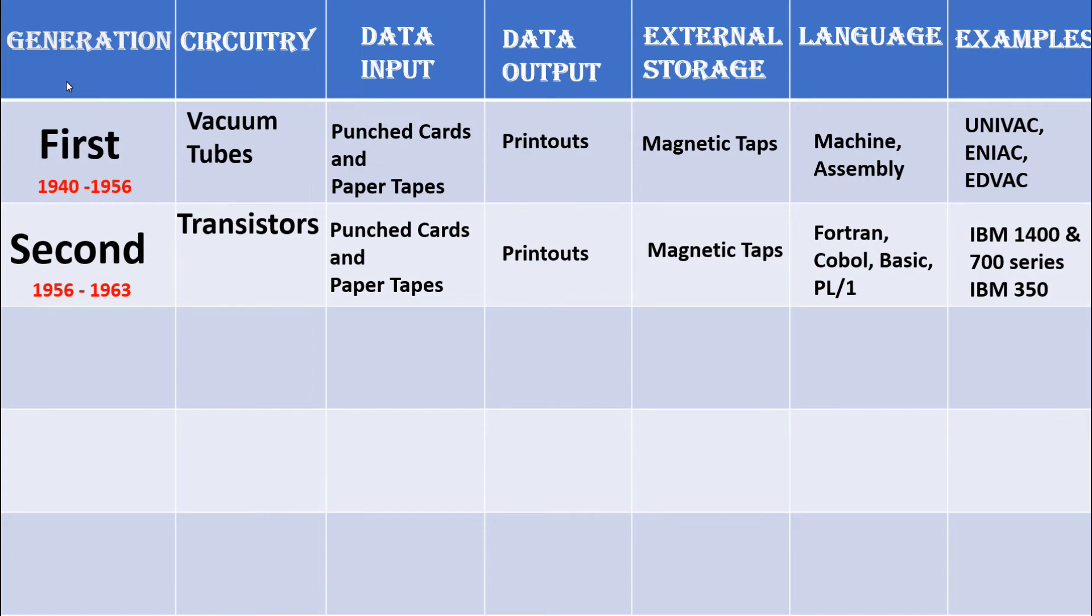In the third generation of computers, they used integrated circuits or ICs. Data were input through keyboard, and output was given through monitors. They used magnetic disks as external storage. Languages used were Pascal, FORTRAN, and COBOL. Examples of computer systems in third generation are IBM System 360, Apple 1, and Altair.